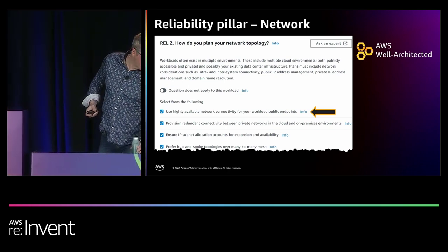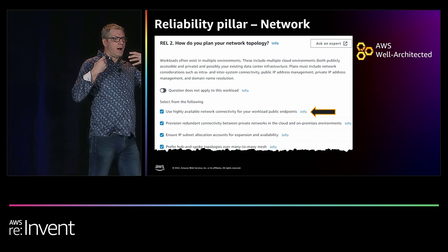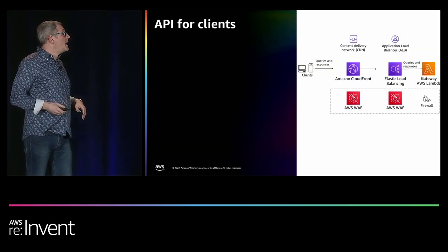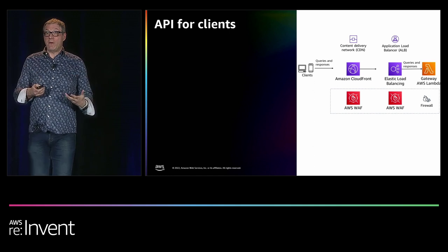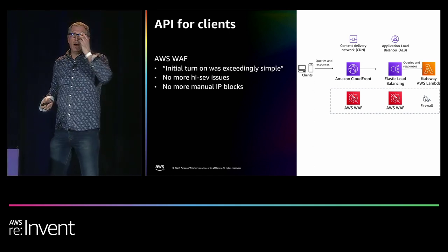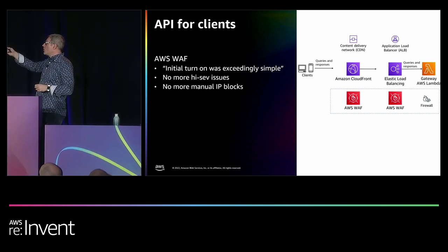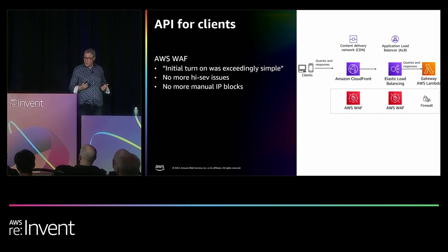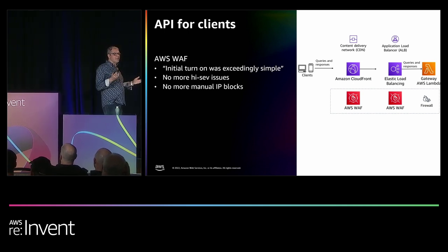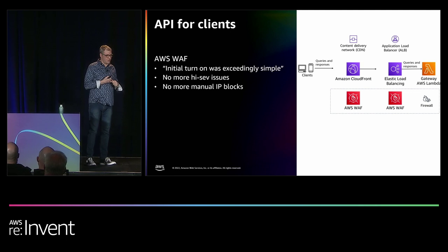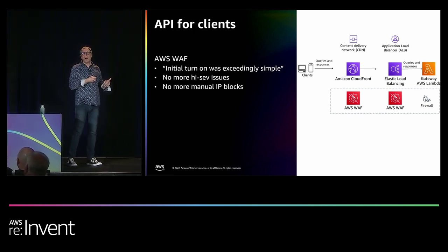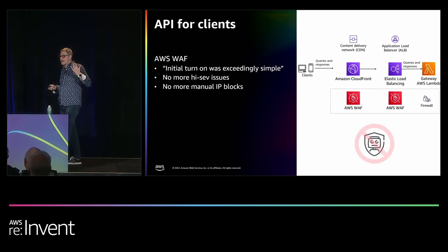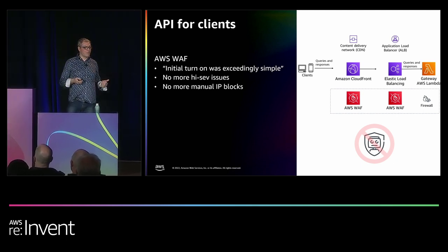The next best practice: using highly available public endpoints. Zooming in on the front end of the IMDB gateway, they're using the Web Application Firewall (WAF), a firewall product offered by AWS. They said the initial turn-on was exceedingly simple, and as soon as they implemented it, it vastly reduced their high-sev issues. They didn't have to put manual network blocks in place. What was causing the high-sev issues? Robots — either malicious or non-malicious — constantly fighting against them. WAF was the solution.